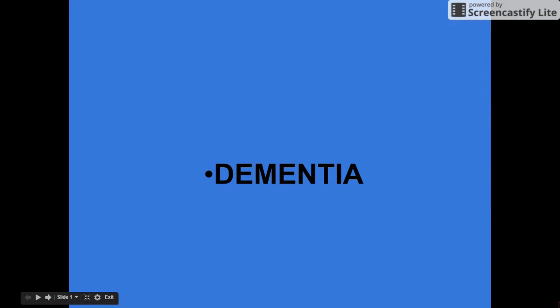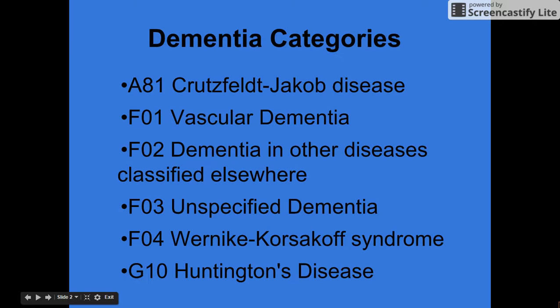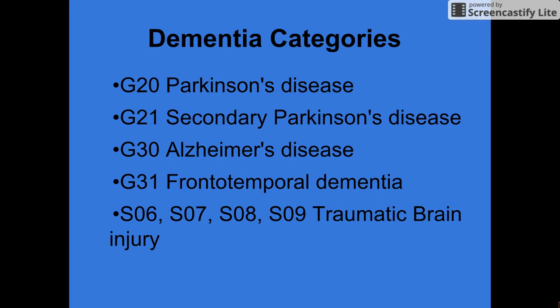Following is the ICD-10 presentation for dementia. Dementia is divided into the following categories: A81 is Creutzfeldt-Jakob disease, F01 is vascular dementia, F02 is dementia in other diseases classified elsewhere, F03 is unspecified dementia, F04 is Wernicke-Korsakoff syndrome, G10 is Huntington's disease, G20 is Parkinson's disease, G21 is secondary Parkinson's disease, G30 is Alzheimer's disease, G31 is frontotemporal dementia, and S06 through S09 are traumatic brain injury.